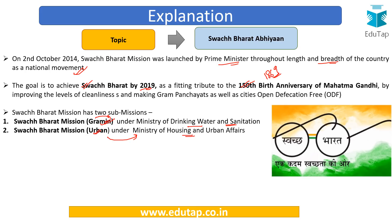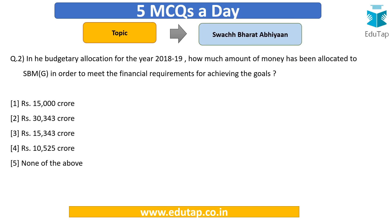Moving to Question 2: In the budgetary allocation for 2018-19, how much money was allocated to SBM Grameen to meet financial requirements for achieving its goals? This is a typical question asked in RBI and NABARD exams. The budgetary allocation was recently in the news because it was said the allocation had been reduced below requirements.